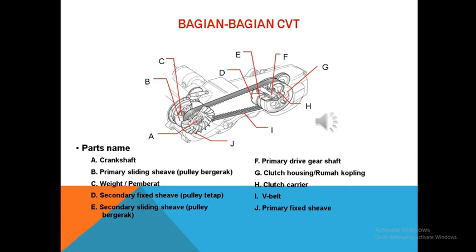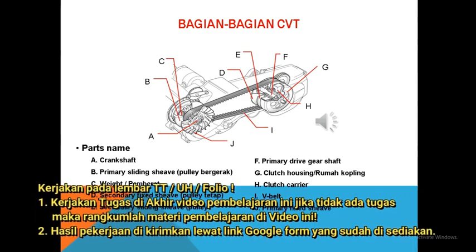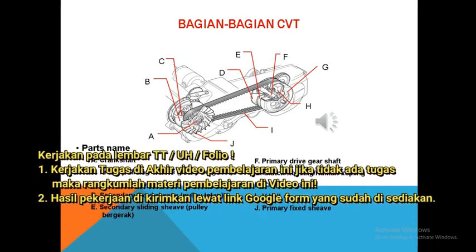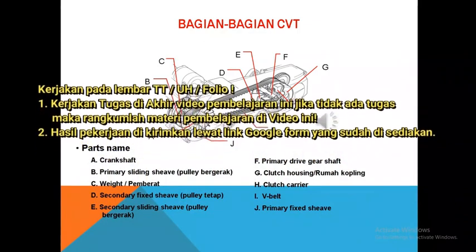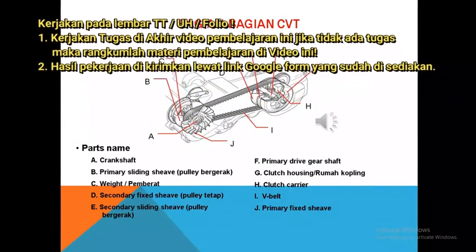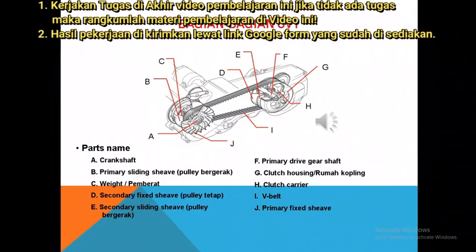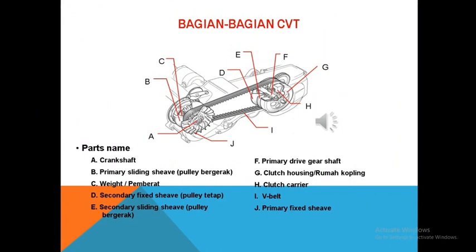Yang berikutnya adalah komponen sistem transmisi otomatis yaitu V-Belt, yang berfungsi untuk menyalurkan tenaga dari puli primer ke puli sekunder dari depan ke belakang. Komponen yang terakhir adalah Primary Fixed Pulley, yang berfungsi menahan sabuk atau sebagai lintasan agar sabuk dapat bergerak ke bagian luar, terdapat kipas sebagai pendingin.